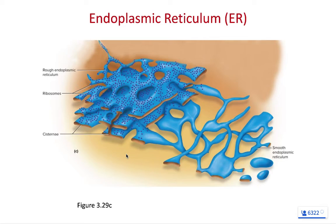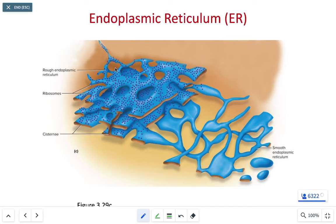From the textbook, we can see blue membranes representing the endoplasmic reticulum, and purple dots in the upper left representing ribosomes. So we have both a rough endoplasmic reticulum and a smooth endoplasmic reticulum illustrated in the figure.